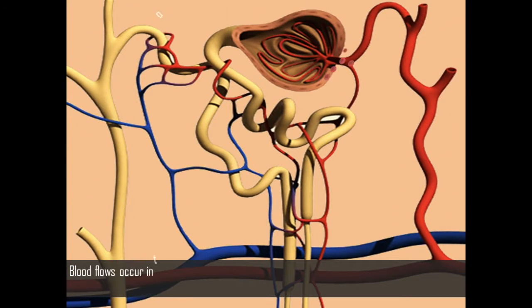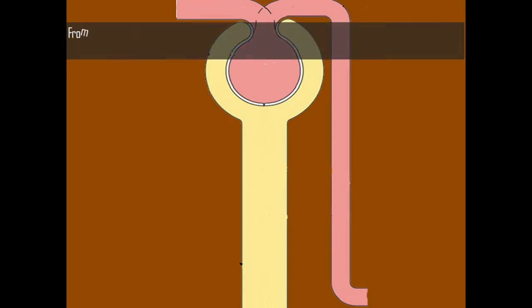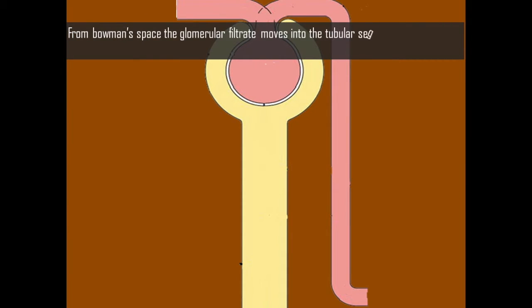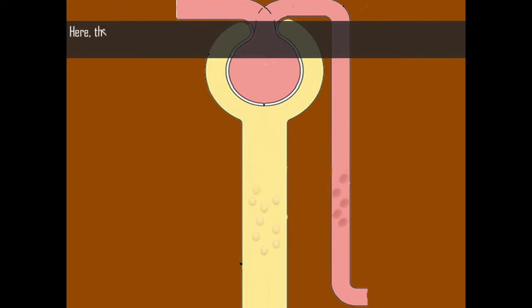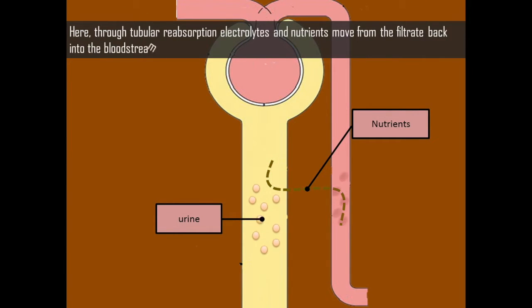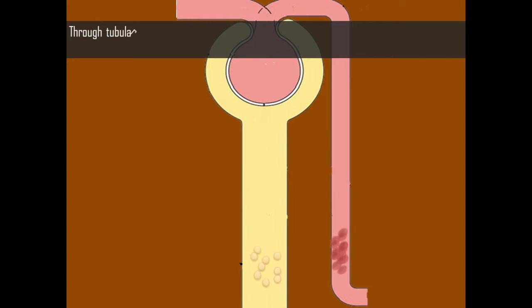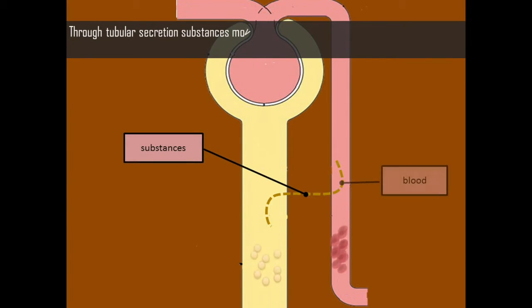Peritubular capillaries rejoin to form the channel by which blood leaves the kidneys and empties into the inferior vena cava. Blood flows into the glomerulus from its afferent arteriole and moves through the glomerulus capillaries into Bowman's Space. From Bowman's Space, the glomerular filtrate moves into the tubular segments of the nephrons, where through tubular reabsorption, electrolytes and nutrients move from the filtrate back into the bloodstream. Through tubular secretion, substances move from the peritubular capillaries into the urine filtrate.